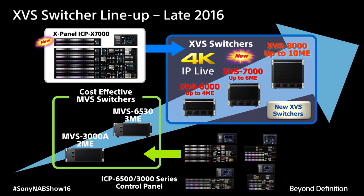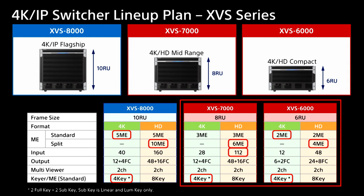These are the three families of video switchers we are introducing at the show. The small frame and mid-size frame will be commercially available towards the end of the year, but the top one is available today. You can use them with standard SDI or IP interfaces — that is your choice. The top-of-the-line 8000 is a 5ME 4K video switcher or 10ME high definition switcher with 160 inputs and 48 outputs, each of which can be IP. The mid-size is a 3ME in 4K or 6ME in HD. The smaller one is 2MEs in 4K or 4MEs in HD. Same technology, same signal processing, same interface: NMI, Network Media Interface.